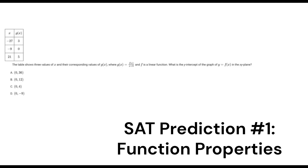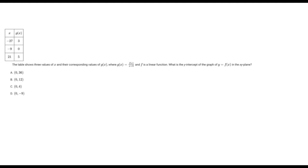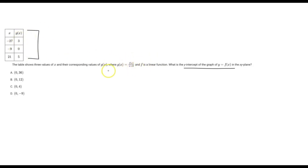Hey everyone, so today we're going to be covering a question type you are 100% going to see on your upcoming SAT exam, and that's going to be those questions where you're given a table or coordinate points, and you have to create a line out of it or determine characteristics — like in this problem where we have to find the y-intercept of y equals f of x. This is quite a complicated example because instead of just having these coordinate points represent f of x, these coordinate points actually represent g of x, and g of x is just f of x except it's undergone a transformation. You can see g of x equals f of x over x plus 3.